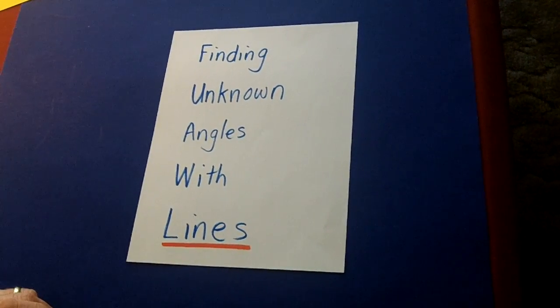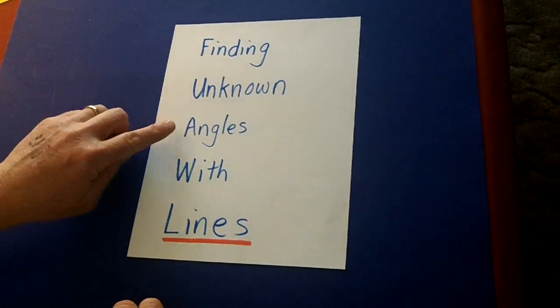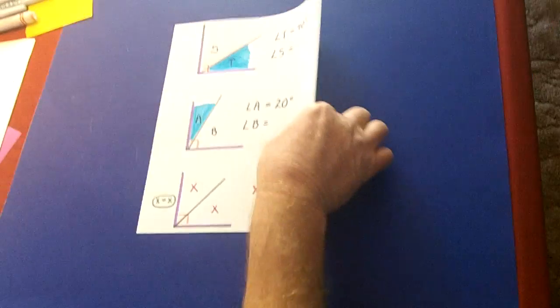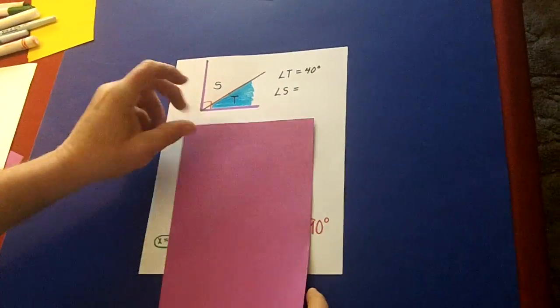So in this lesson we will try to find unknown angles with lines. Let's take a look at the easy ones first.